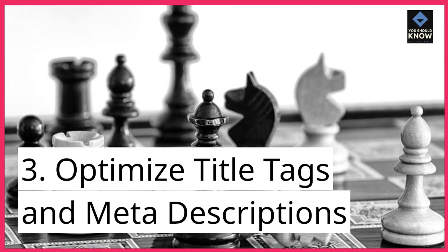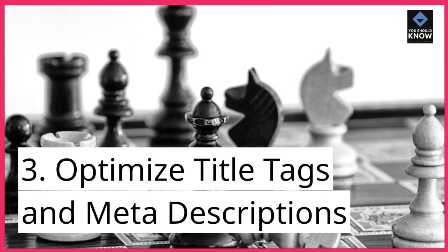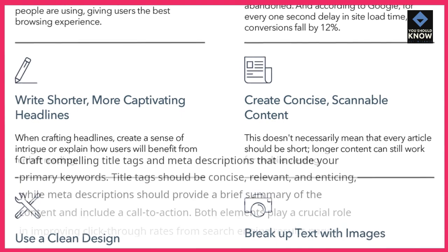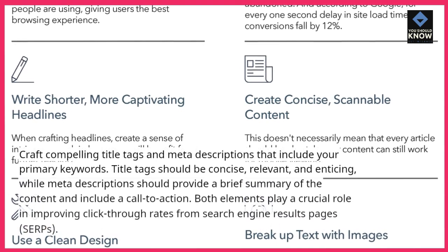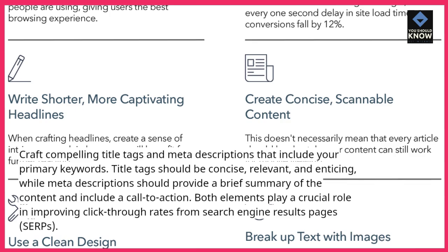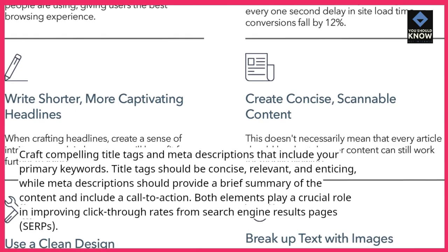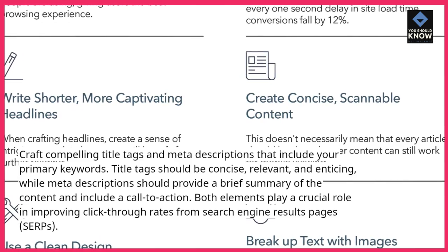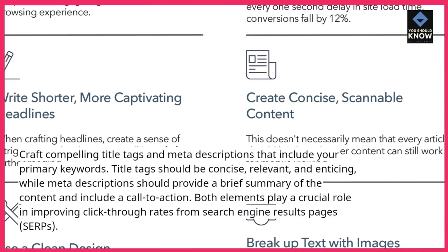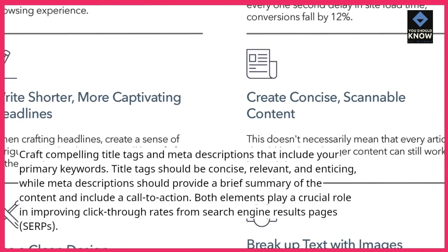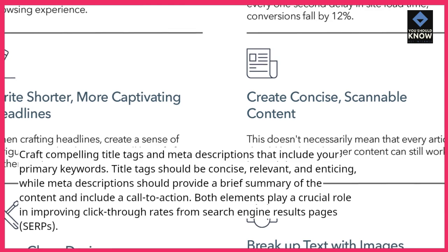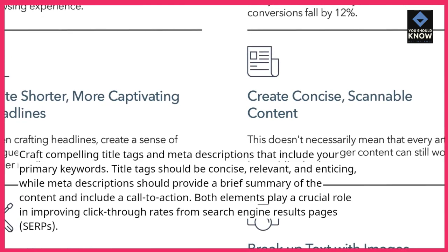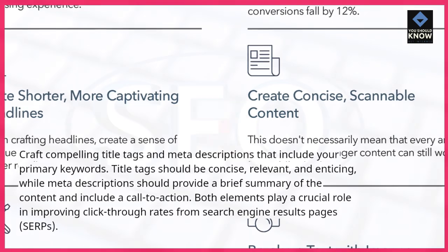3. Optimize title tags and meta descriptions. Craft compelling title tags and meta descriptions that include your primary keywords. Title tags should be concise, relevant, and enticing, while meta descriptions should provide a brief summary of the content and include a call to action. Both elements play a crucial role in improving click-through rates from search engine results pages (SERPs).